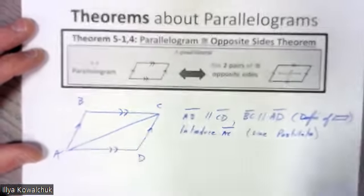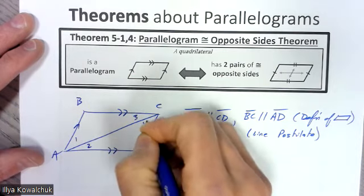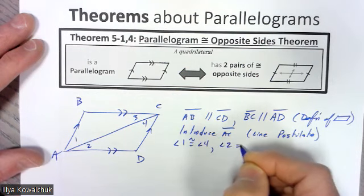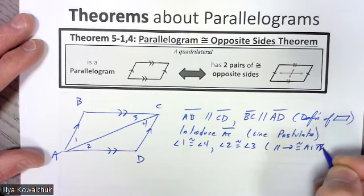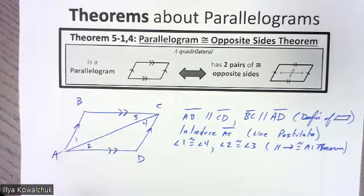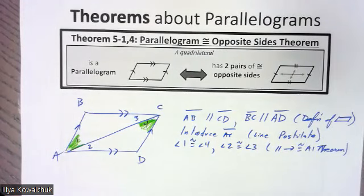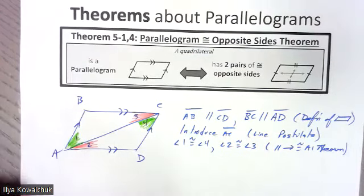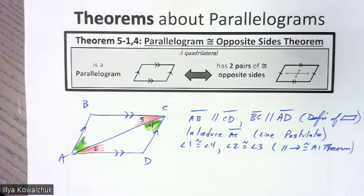Next we label angles 1, 2, 3, and 4. We know that angle 1 is congruent to angle 4, and angle 2 is congruent to angle 3, because of the parallel lines giving us the Alternate Interior Angles Theorem. The green angles correspond to the one pair of parallel lines and the other pair to the other set.